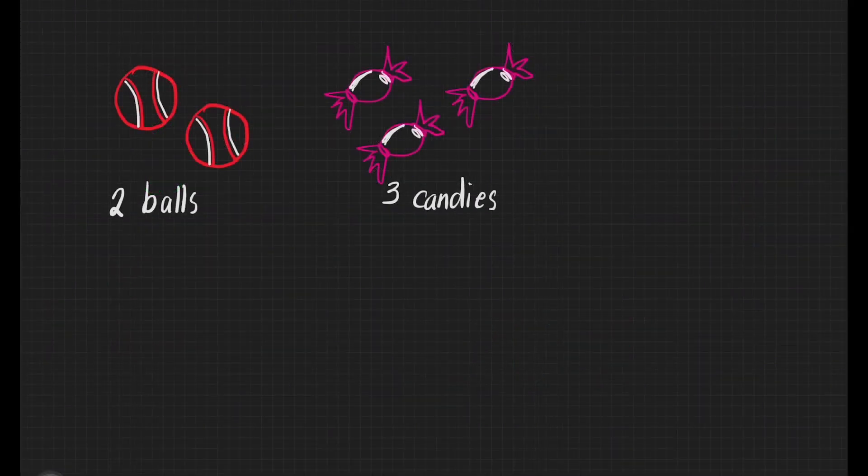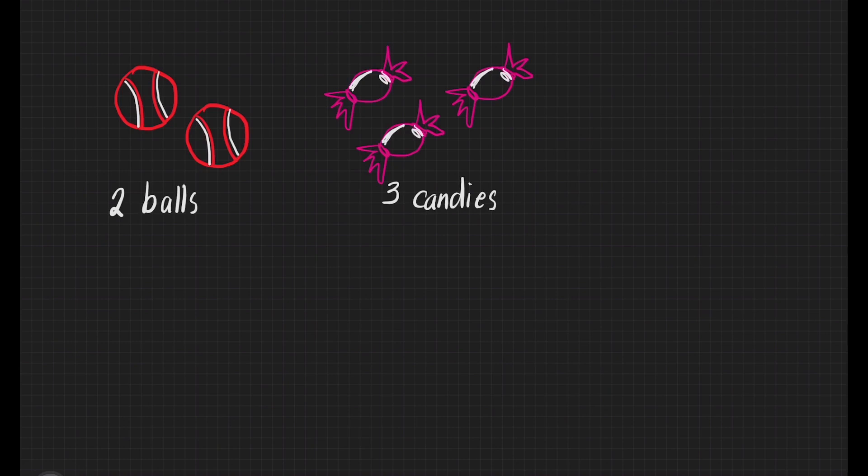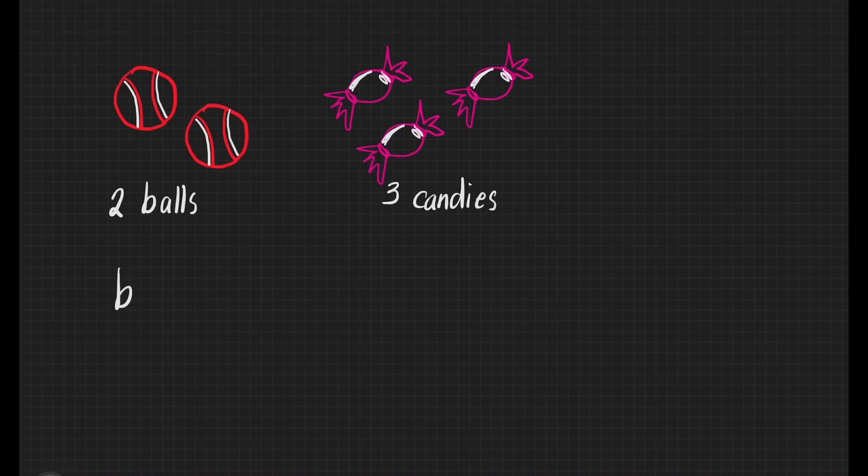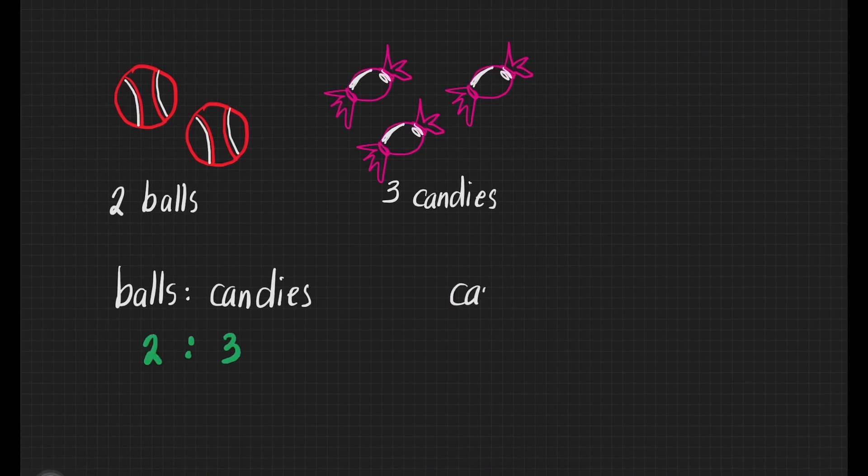Let us consider the following example. Here we have 2 balls and 3 candies. The ratio of the number of balls to the number of candies is 2 is to 3. While the ratio of the candies to the number of balls is 3 is to 2, they mean the same thing: that for every 2 balls, there are 3 candies.